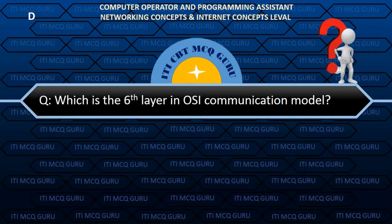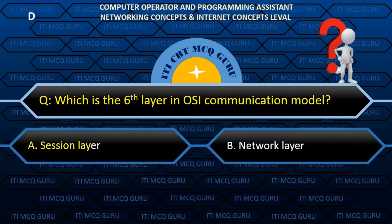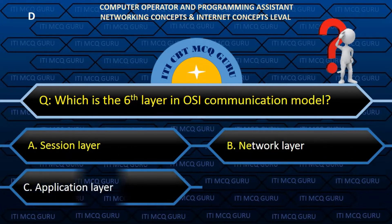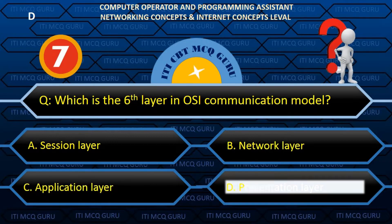Which is the 6th layer in the OSI communication model? B. Presentation layer.